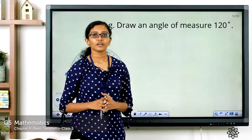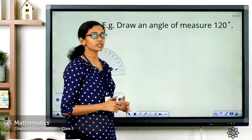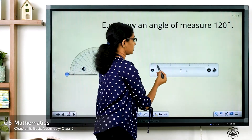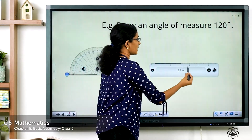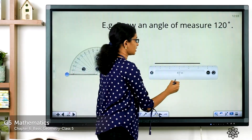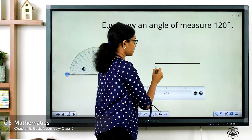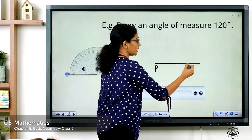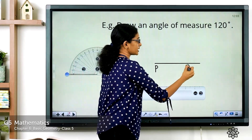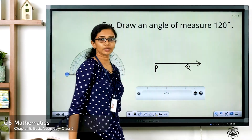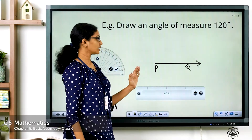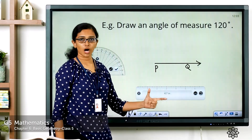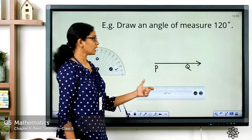The first step is to draw the lower arm. Take the ruler and draw a line. Mark a point — let it be P — and another point, let it be Q. Draw the arrow. Ray PQ represents the lower arm of the angle.